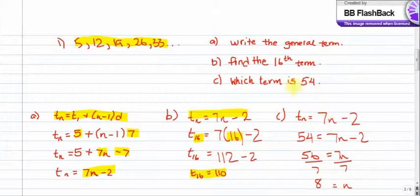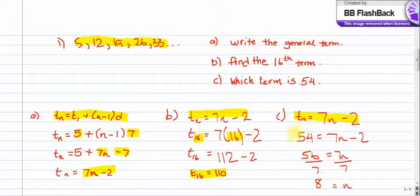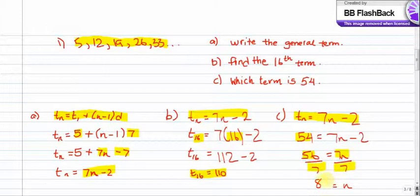Now C is asking us to find which term gives an answer of 54. We start with the general term formula: T of N equals 7N minus 2. We fill in 54 for T of N and solve for N. We add 2 to both sides, which gives us 56 equals 7N, then divide both sides by 7, giving a final answer of 8. That means the 8th term of the sequence is 54.